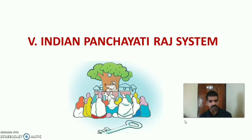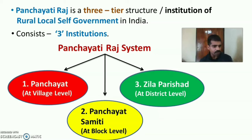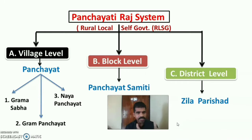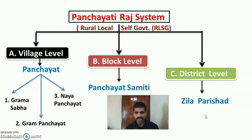Indian Panjayati Raj system: Panjayati Raj is a three-tier structure of rural local self-government in India. It consists of three institutions: Panjayat at village level, Panjayat Samadhi at block level, and Zilla Parishat at district level. At village level the institution is Panjayat, which has three structures: Gram Sabha, Gram Panjayat and Nyaya Panjayat.